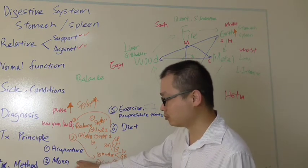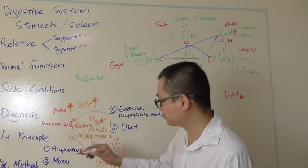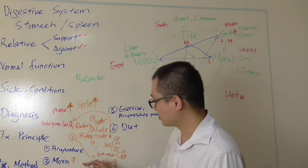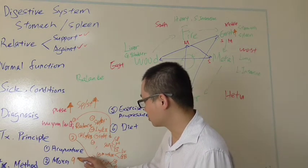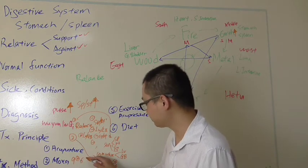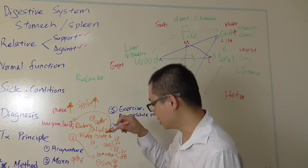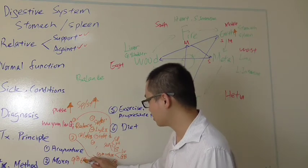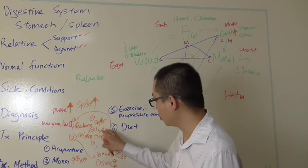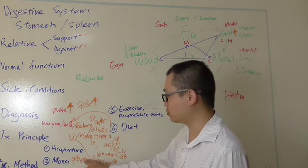Then we do moxi bushen. We can do moxi bushen clockwise, nine times, it's reinforced, tonify six times circle counterclockwise reduce. So we can use moxi bushen on those points as well. That's moxi bushen.